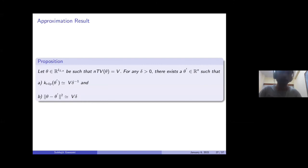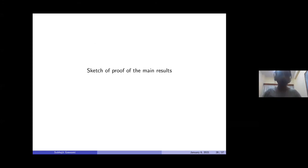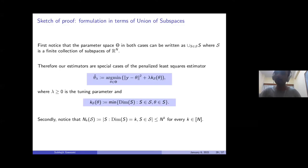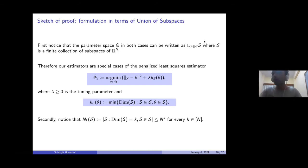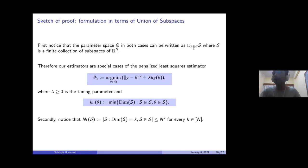I'm almost out of time. Let me give a very brief sketch of the main proof. Both of our estimators can be cast as a penalized estimator over a union of subspaces, where each subspace corresponds to a particular partition and consists of all arrays constant on the blocks of that partition. Both estimators are special cases of a penalized discrepancy estimator where the penalty is the tuning parameter times ks(θ) — the minimum dimension of a subspace in the collection containing the signal.